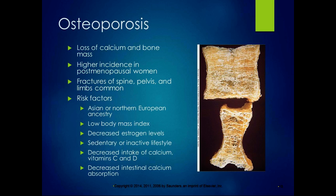Risk factors for osteoporosis include ancestry — Asian or Northern European ancestry increases risk, and that's a genetic component you can't control. Having a low body mass index means you're not putting as much demand on your bones; per Wolff's Law, bones respond to the stresses we put on them. Decreased estrogen levels also contribute. A sedentary or inactive lifestyle you can certainly control. Decreased intake of calcium, vitamin C and D are also risk factors.